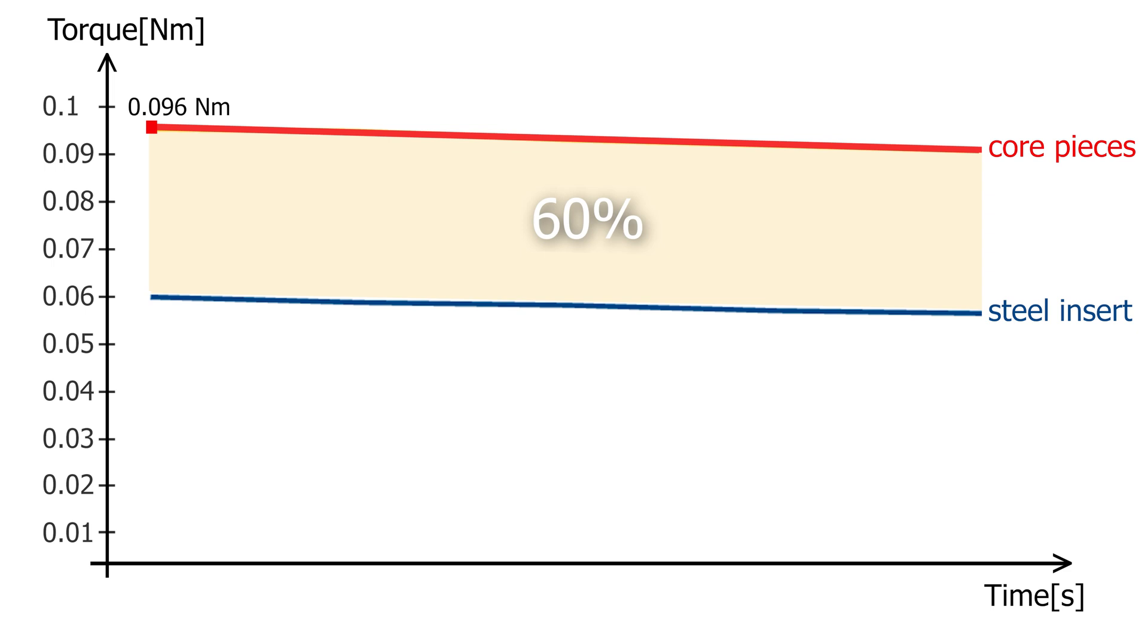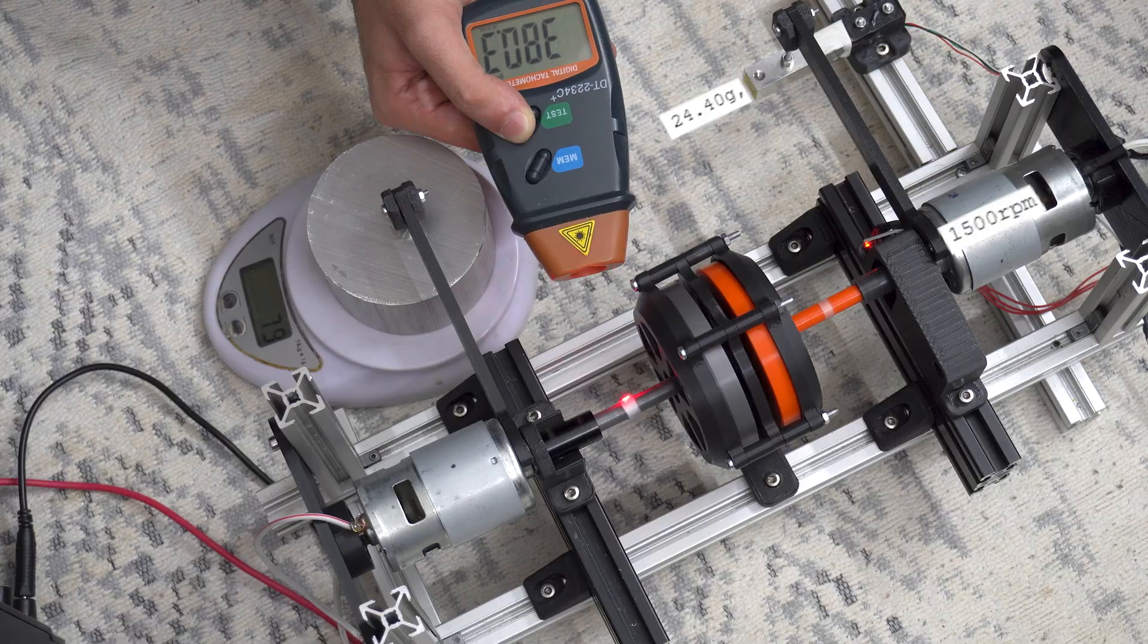In the previous video, thanks to the improved modulator, the gearbox's torque capacity increased by 60%. So does this improved modulator also increase the efficiency?